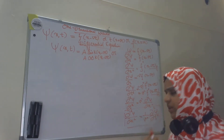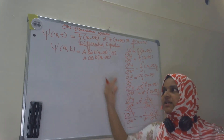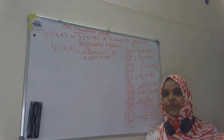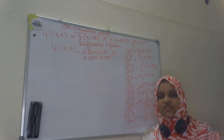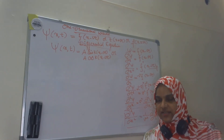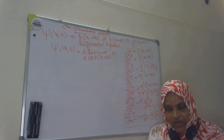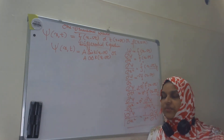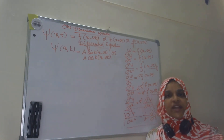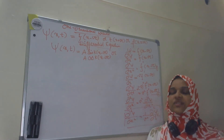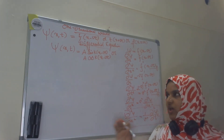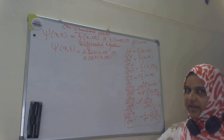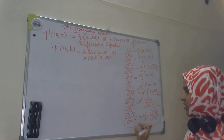From this equation, we can directly write the differential equation for a three-dimensional wave. A one-dimensional wave travels along a one-dimensional medium, but if the wave is travelling along a three-dimensional medium, the wave becomes three-dimensional. So from this one-dimensional wave equation, we can directly write the three-dimensional wave equation.